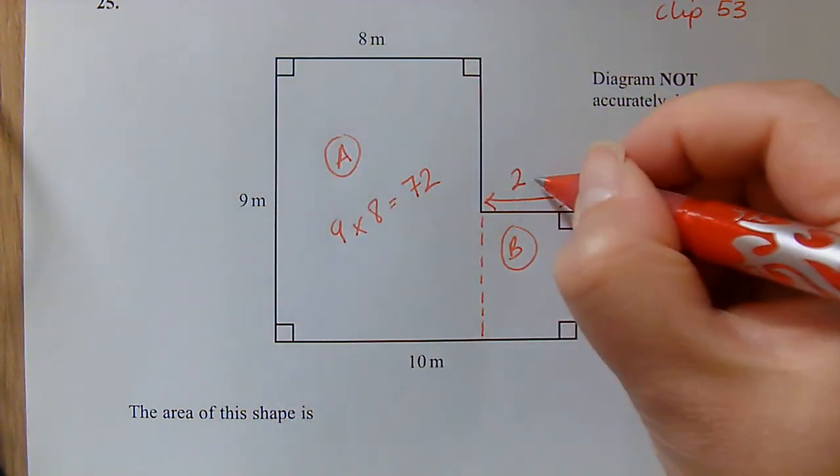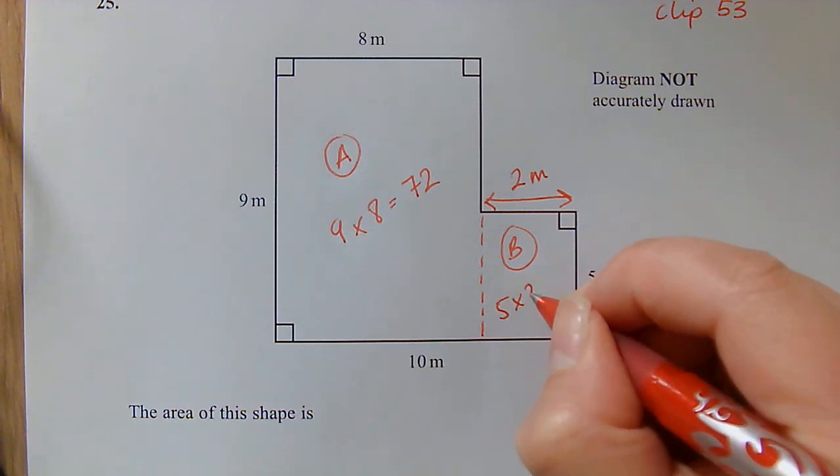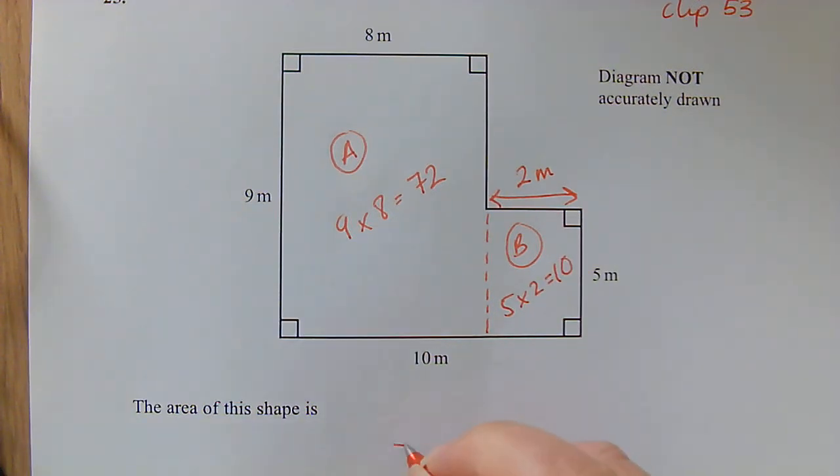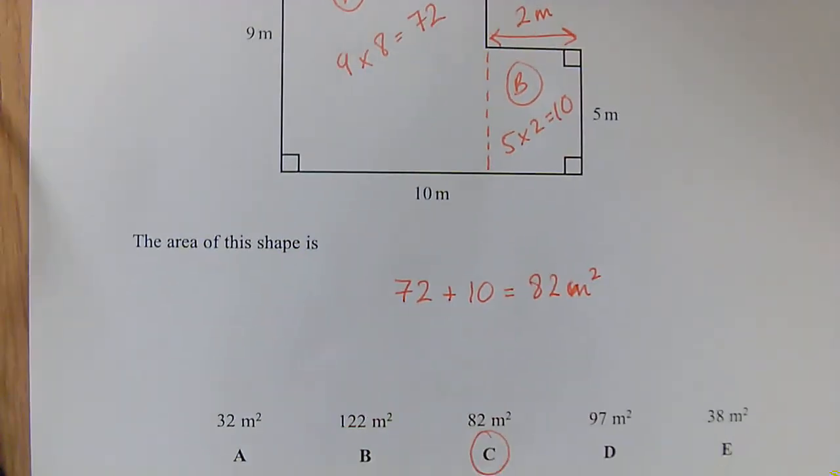So the overall area, I would need to add those two areas together to give me 82 meters squared, which is C.